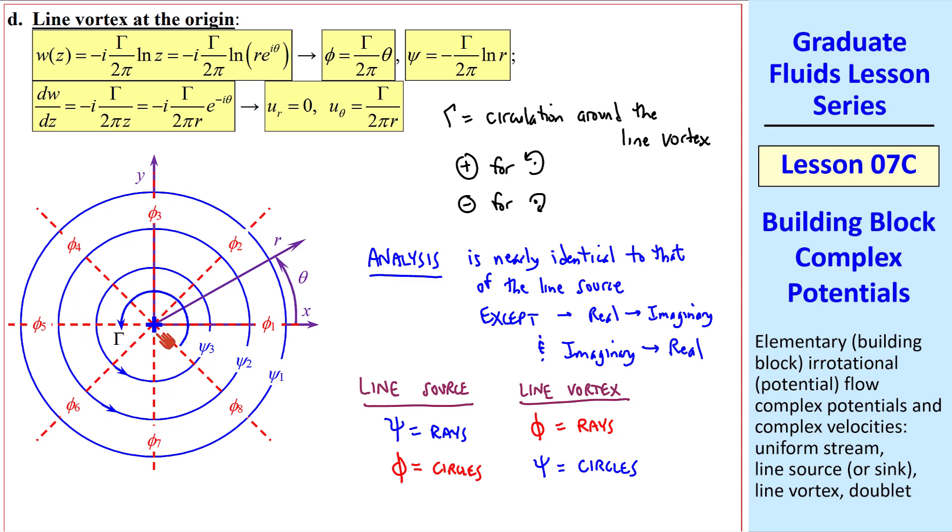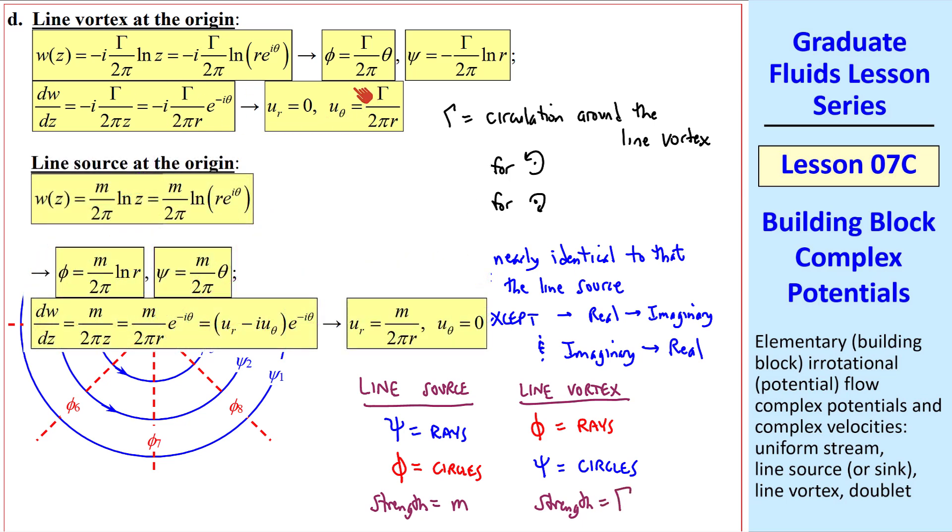Flow moves in an irrotational manner around the origin. Again, the origin is a singularity, since u theta is infinity when r equals 0. The strength of a line source is m, and the strength of a vortex is gamma. But if you compare these equations with those of the line source, you'll find that they're very similar, but opposite as I said.